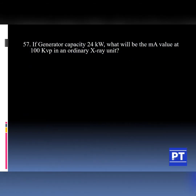Question number 57: If generator capacity is 24 kW, what will be the MA value at 100 kVp in an ordinary X-ray unit? MA means milliampere, which determines the current value, at 100 kVp. KVp means kilovolt peak, which is the voltage in an ordinary X-ray unit.